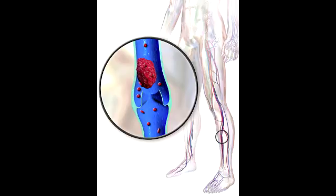What is Deep Vein Thrombosis? Deep vein thrombosis is the formation of a blood clot, also known as a thrombus, in the deep veins, which are predominantly in the legs.